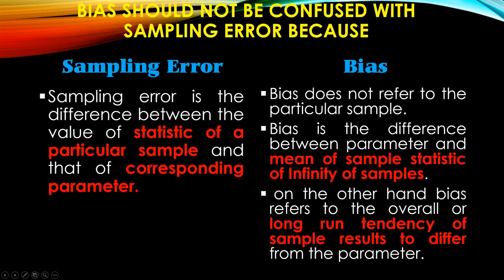Bias is the difference between the parameter and the mean of sample statistics, based on a large number of samples — or infinitely many samples.